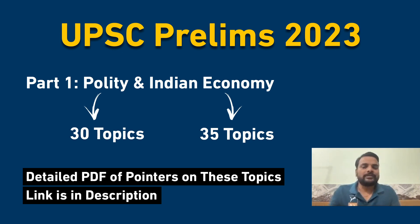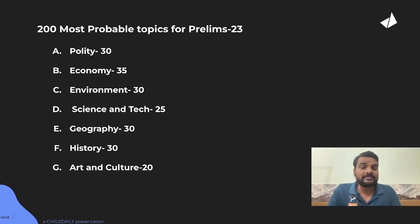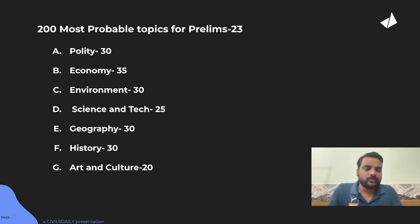Without any further delay, let's start the topics. 200 topics will be covered from seven areas: Polity, Economy, Environment, Science and Tech, Geography, History, and Art and Culture. You can be sure that these are the topics you must focus on, and most likely 95% of the questions will be coming from these topics only.